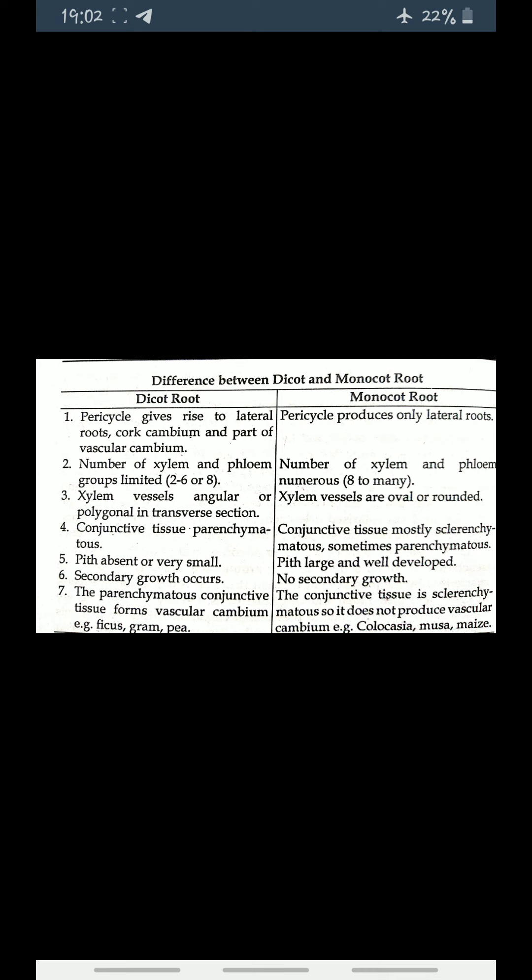Pith is absent or very small in dicot roots, whereas in monocot root, pith is large and well developed. In dicot root, secondary growth occurs, but in monocot root, no secondary growth occurs. The parenchymatous conjunctive tissue forms vascular cambium in dicots — examples include Ficus, gram, and pea. In monocots, the conjunctive tissue is sclerenchymatous, so it does not produce vascular cambium — examples include Colocasia, Musa, and Maize.